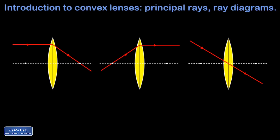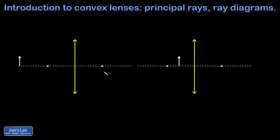When we study lenses, we usually want to find the image formed as light from an object passes through the lens. We can use a ray diagram to draw the process, focusing on three principal rays that refract in a very simple way. First, a ray coming into the lens parallel to the principal axis will be refracted through the focus on the opposite side. Second, light coming into the lens through the focus will be refracted parallel to the principal axis — the time reversal of the first. Finally, a ray passing through the center of the lens will be unrefracted, because the two surfaces it passes through are parallel to each other.